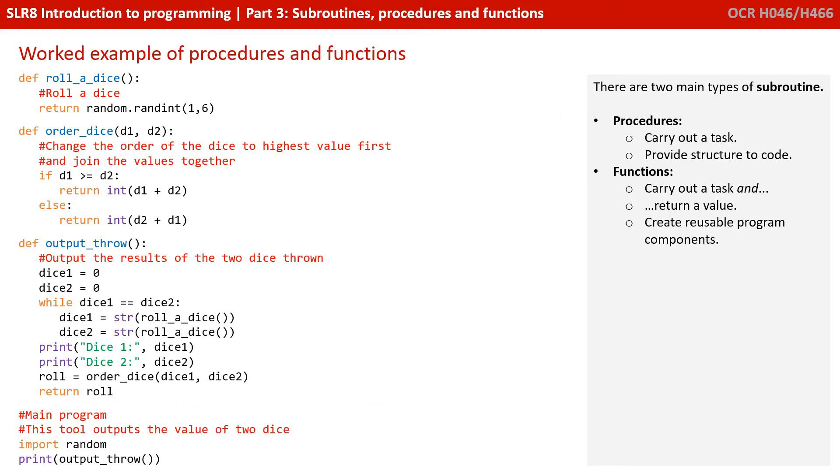So now we've gone over the basics, let's actually look at a worked example of procedures and functions in the following Python program. So a quick recap then, we have two main types of subroutines. There's procedures that carry out a task and functions that carry out a task and return a value.